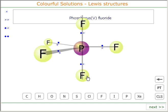Between the axial Fluorines and the equatorial Fluorines the bond angle is 90 degrees. So this trigonal bipyramidal shape has two different bond angles, 120 degrees and 90 degrees.